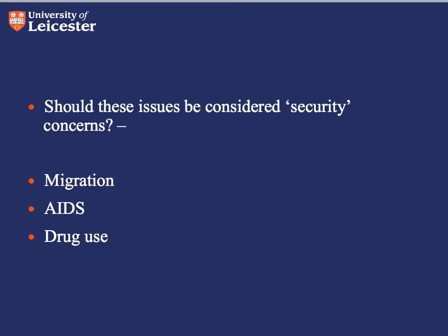One of the questions I've asked you to think about in the forums this week is whether the broadening of the security agenda is always a good thing. Are there certain issues that should be securitised — taken from the realm of normal politics and considered a security threat? What are the pros and cons of securitising certain issues, such as migration, AIDS, or drug use? As we go through the course, we're going to look at migration, the environment, AIDS and HIV, transnational crime, and think about the political, ethical, and theoretical implications of considering these issues as security threats.